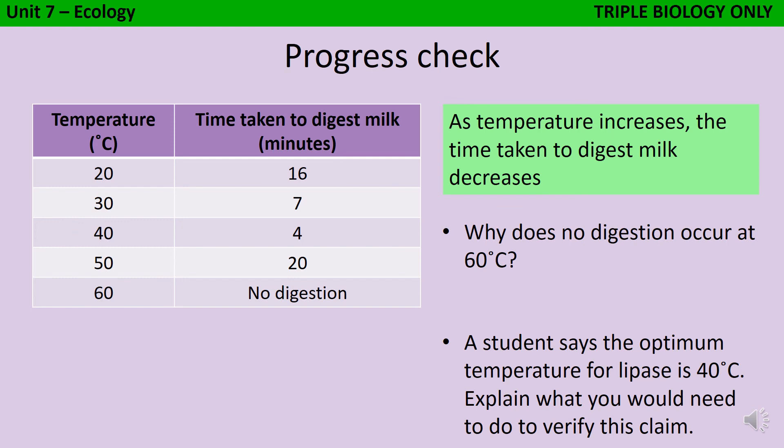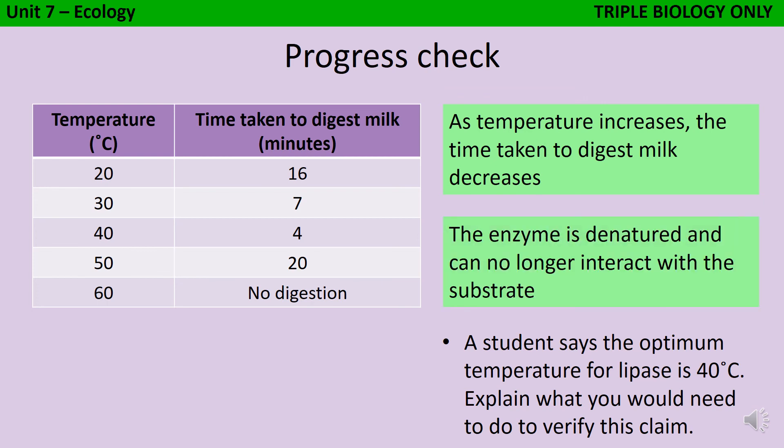No digestion occurs at 60 degrees C because this temperature is too hot and so the enzyme has become denatured. That means its active site has permanently changed shape and therefore, it won't be able to interact with the substrate anymore, so no digestion can occur.